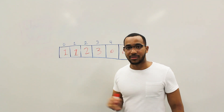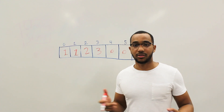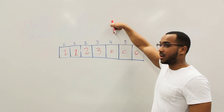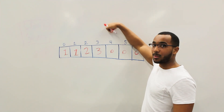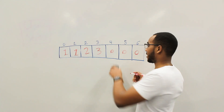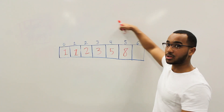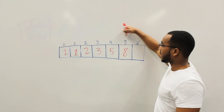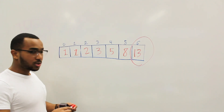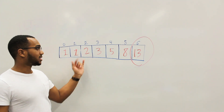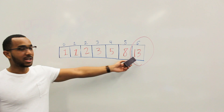The answer to sub-problem three is the addition of index one and index two: two plus one equals three. The answer to four is three plus two equals five. The answer to five is five plus three equals eight. The answer to six is eight plus five equals 13. We ripple down the array and get our answer: 13. Notice every cell only depends on the previous two items, meaning we could do this in constant space.